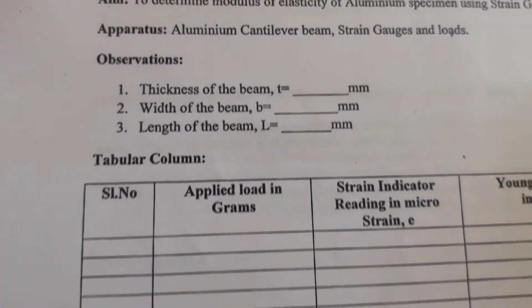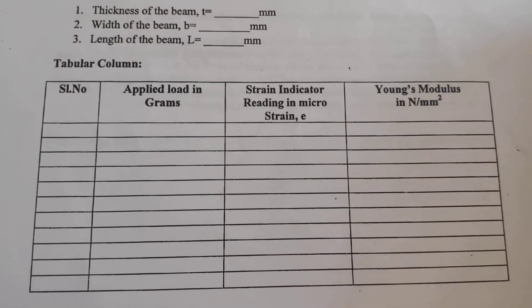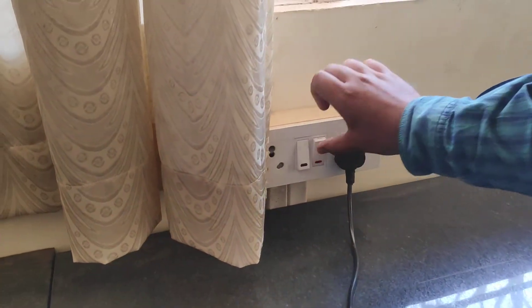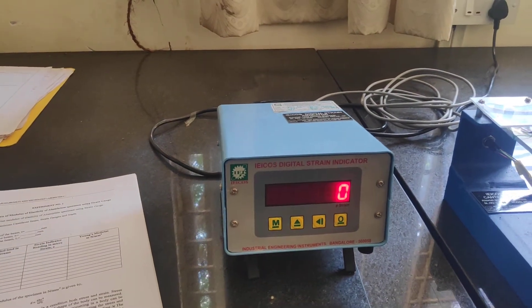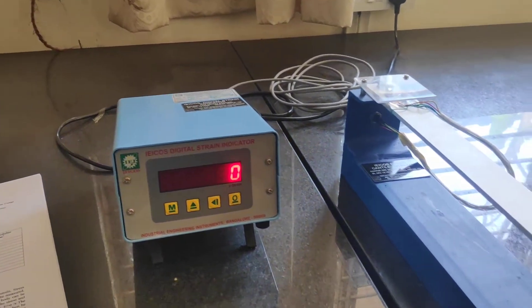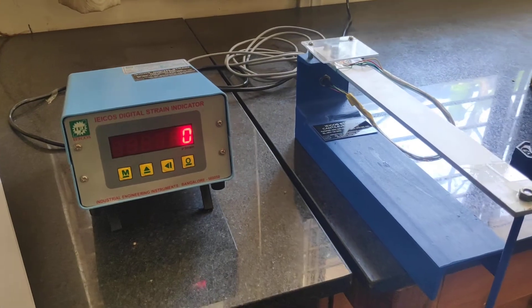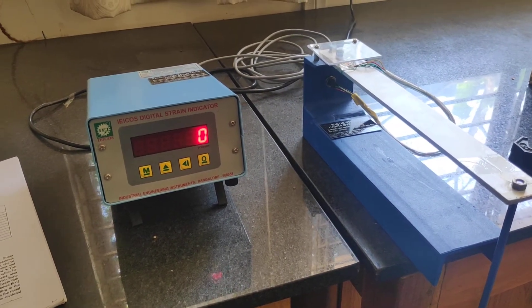Once the initial observations are done, you have to switch on the equipment by switching on the power supply button. Once the power supply is on, you will get the screen reading, and if it is initially not zero, you have to make it zero.